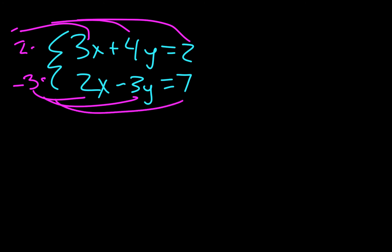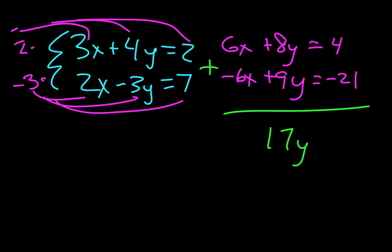Now I'm just going to distribute this 2 to everything and this negative 3 to everything on the bottom. So 2 times 3 is 6x, 2 times 4 is 8y, and 2 times 2 is 4. If I multiply these, I get negative 6x. If I multiply these, I get positive 9y. And then negative 21. So just like on the previous problem, now we're going to add these together. Add the x's and they cancel. Add these and we get 17y. And then add these and we get negative 17. Do just a tiny bit of algebra. Divide by 17, and we end up with y equals negative 1.